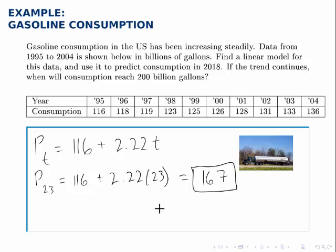The second part of the question flips this around. Rather than giving a year and asking for consumption, we're given a consumption and asked what year corresponds to that. We're still using the same linear model, but instead of being given a t value and asked for a p value, we're given a p value and asked for a t value.